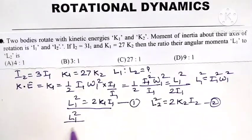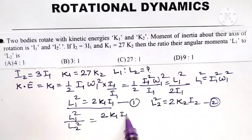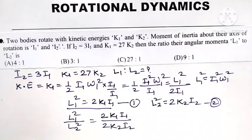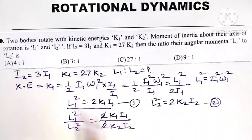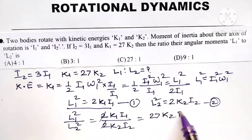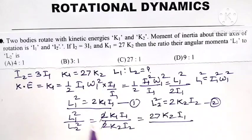L1 square upon L2 square equals 2K1 I1 upon 2K2 I2. Now let us put the value. 2 gets cancelled with 2. K1 equals 27K2, so this becomes 27K2 into I1 upon K2.